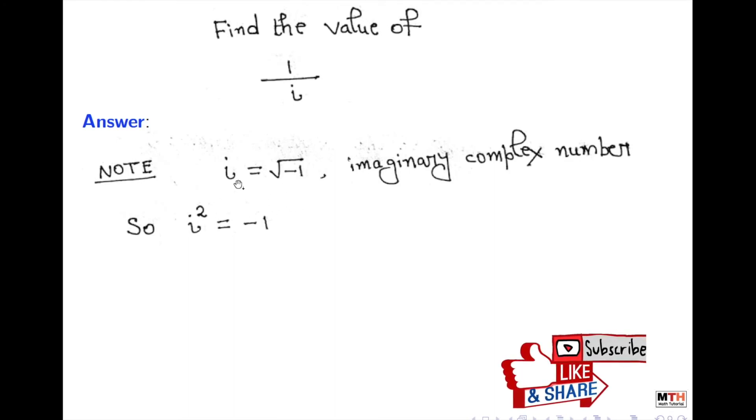on both sides, we get i² = -1. We can easily write it as -i² = 1. Now look, we have to find the value of 1/i.